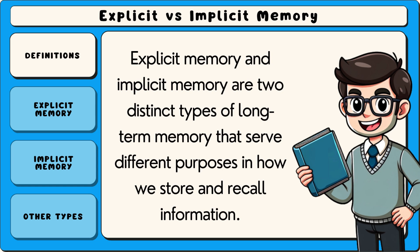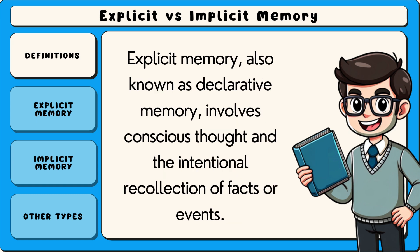Explicit memory and implicit memory are two distinct types of long-term memory that serve different purposes in how we store and recall information. Explicit memory, also known as declarative memory, involves conscious thought and the intentional recollection of facts or events.